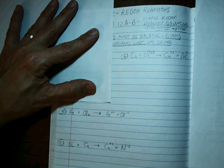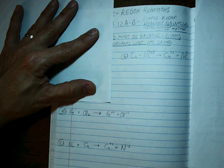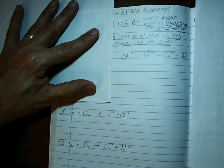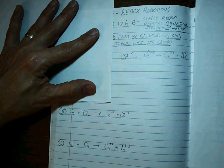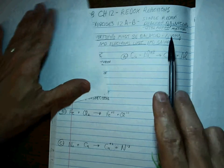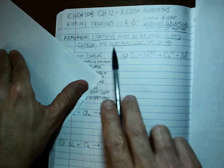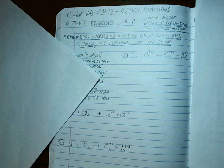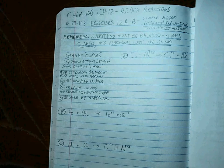See if you can balance it on your own, then come back and we'll see whether or not you did it right. When you're done, even if you weren't able to balance it, you should be able to check: it's easy to verify that the atoms, charges, and electrons lost and gained are all balanced.